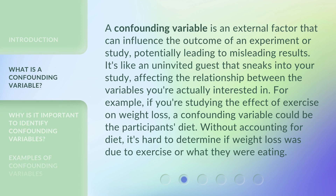A confounding variable is an external factor that can influence the outcome of an experiment or study, potentially leading to misleading results. It's like an uninvited guest that sneaks into your study, affecting the relationship between the variables you're actually interested in. For example, if you're studying the effect of exercise on weight loss, a confounding variable could be the participant's diet. Without accounting for diet, it's hard to determine if weight loss was due to exercise or what they were eating.